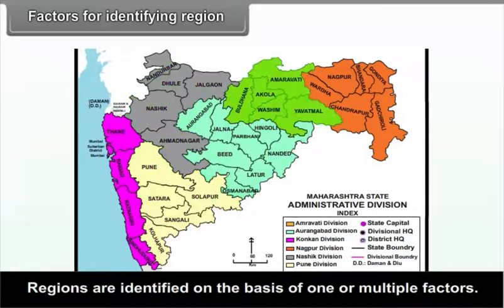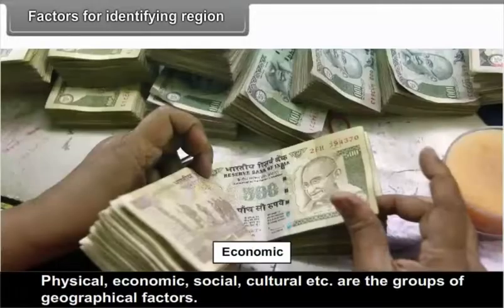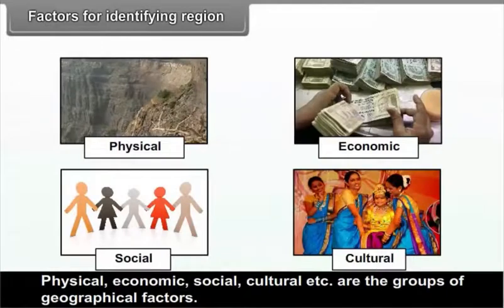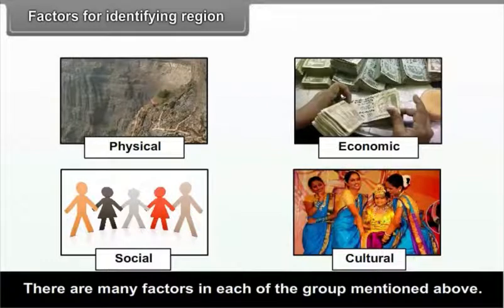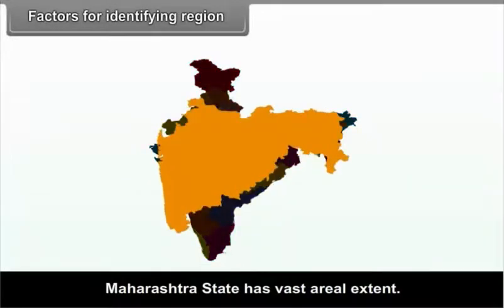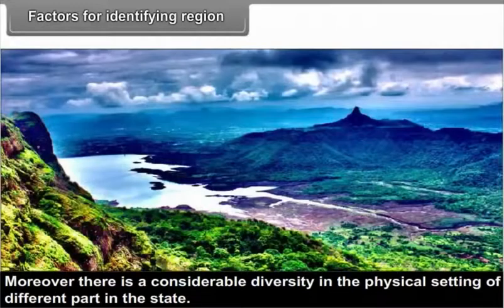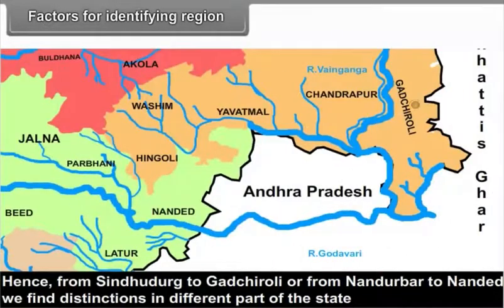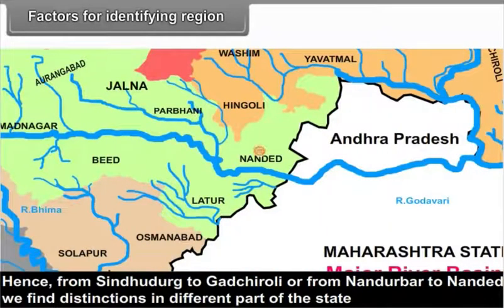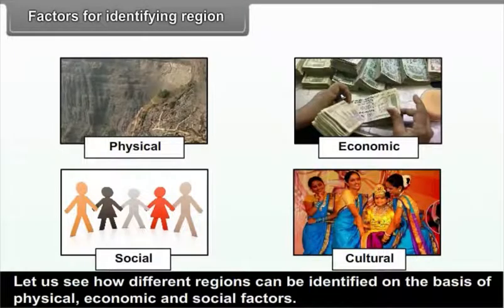Factors for identifying regions. Regions are identified on the basis of one or multiple factors — physical, economic, social, cultural, etc. are the groups of geographical factors. Regions can be identified considering a single factor or their combinations. Maharashtra state has a vast aerial extent and there is considerable diversity in the physical setting of different parts of the state. The physical setting influences a number of factors. Hence, from Sindhudurg to Gadchiroli or from Nandurbar to Nanded, we find distinctions in the different parts of the state. Let us see how different regions can be identified on the basis of physical, economic and social factors.